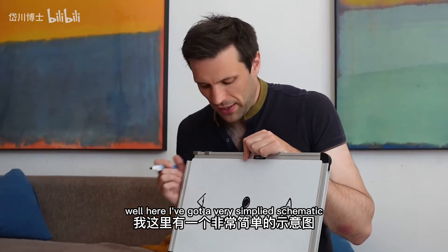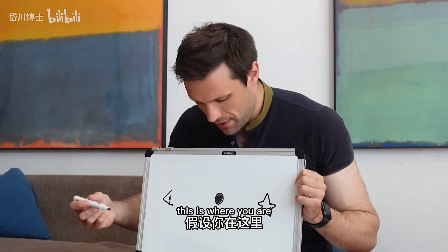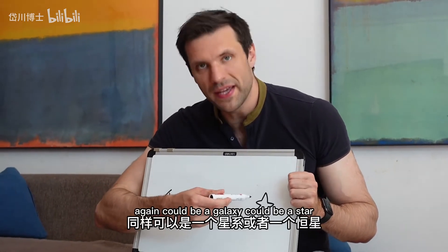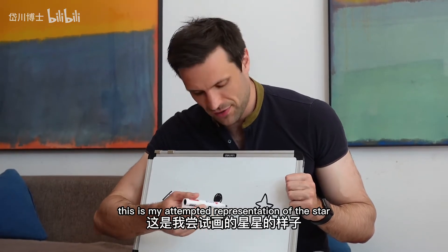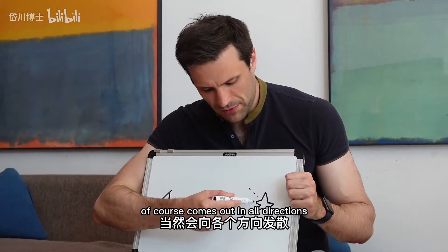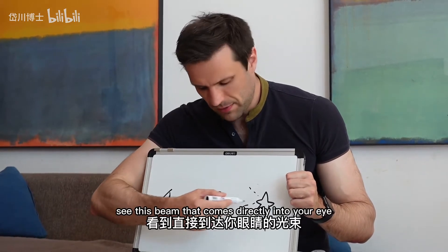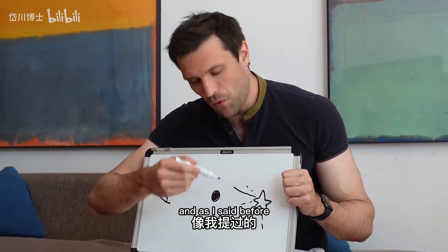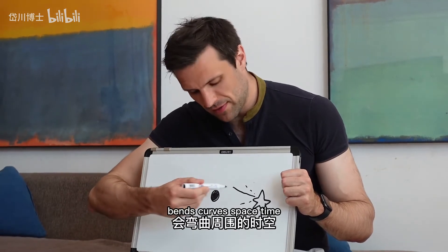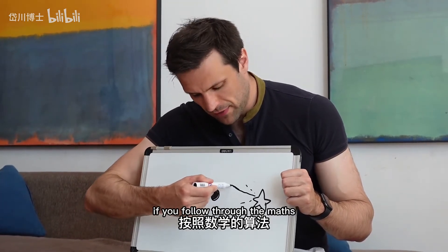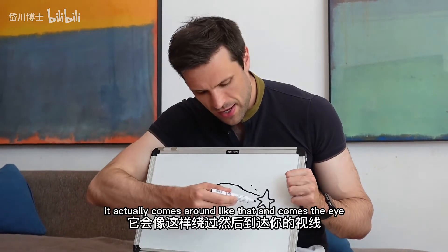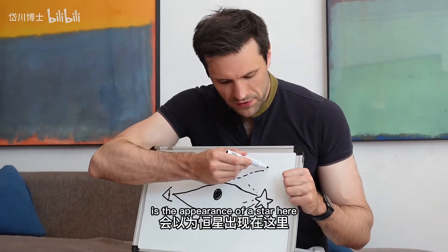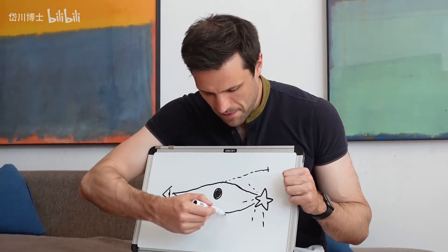So what exactly is gravitational lensing? Well, here I've got a very simplified schematic. This is where you are; this is a massive object in between — could be a galaxy, another star, whatever — and this is a distant point, again could be a galaxy or a star. Now usually light from a star comes out in all directions and you would only see the beam that comes directly into your eye. What happens in gravitational lensing though is some of the light beams come in like this, and as I said, this mass bends curved space-time so the light no longer travels in a straight line. If you follow through the maths, it actually comes around like that and into the eye, and obviously a corresponding beam from the other side.